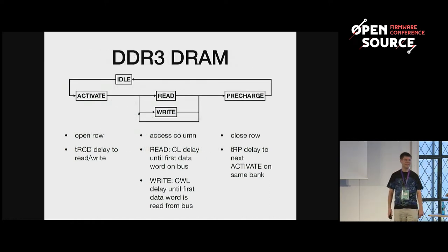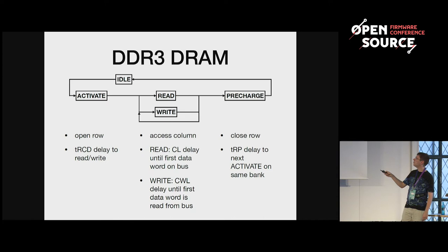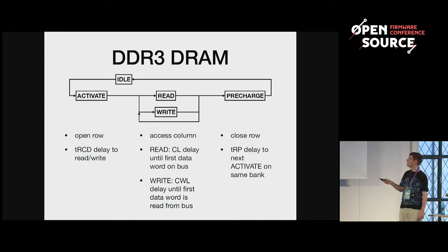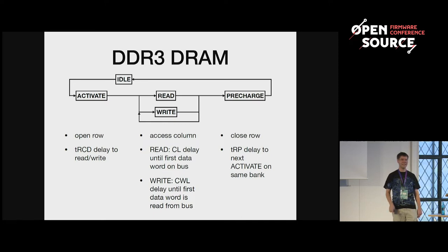The memory has a sort of state machine. It starts when a bank is in the idle mode. Then you send a command to open a row in a bank, and that takes a certain time — the TRCD delay — before you can submit read or write requests. For DDR3 and DDR4, it's measured in memory clocks and not in absolute units. So when you look at the datasheet from DDR2 memory and compare to DDR4, it seems the latency got worse, but it didn't get worse — because the frequency increased, the clock counts increased, but the absolute value didn't change that much.